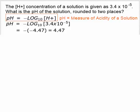You get a negative value, but then pH has a negative sign in front of that log. So your pH ends up being positive 4.47, when rounded to two places.